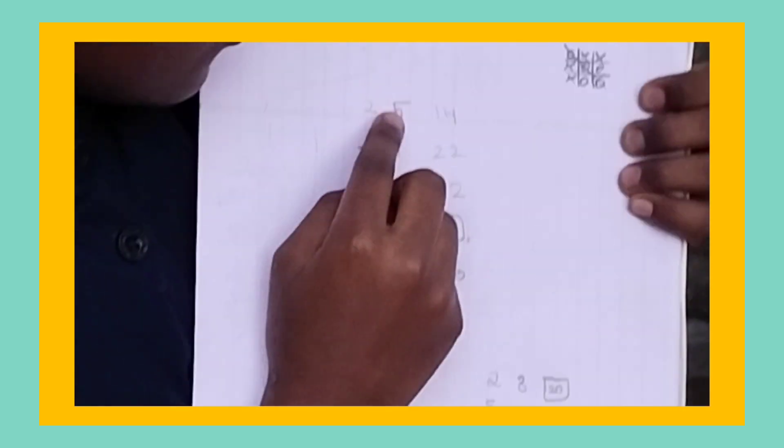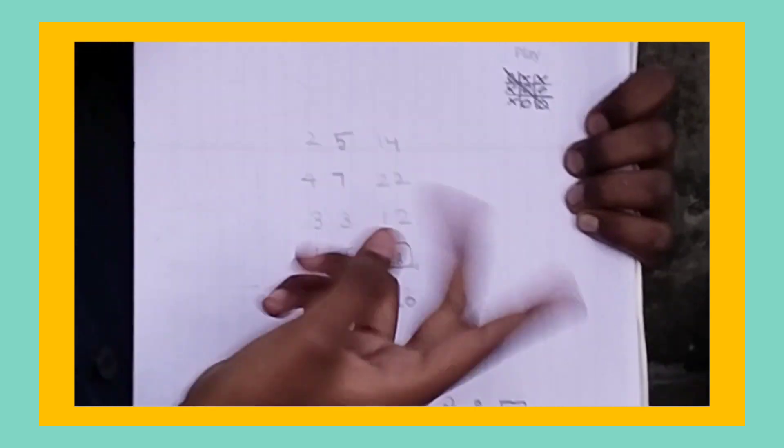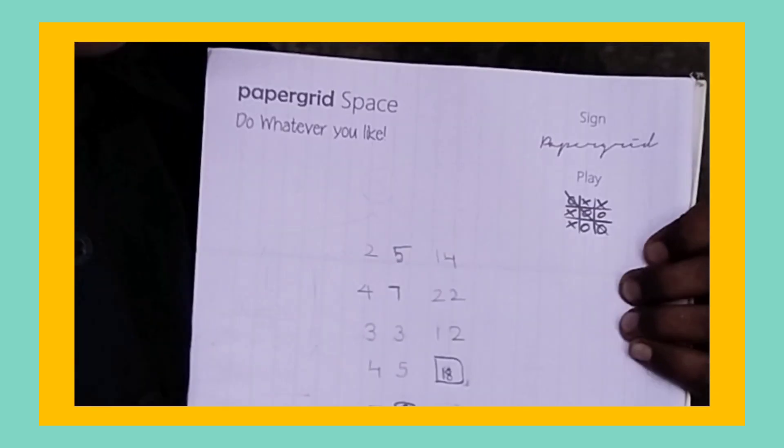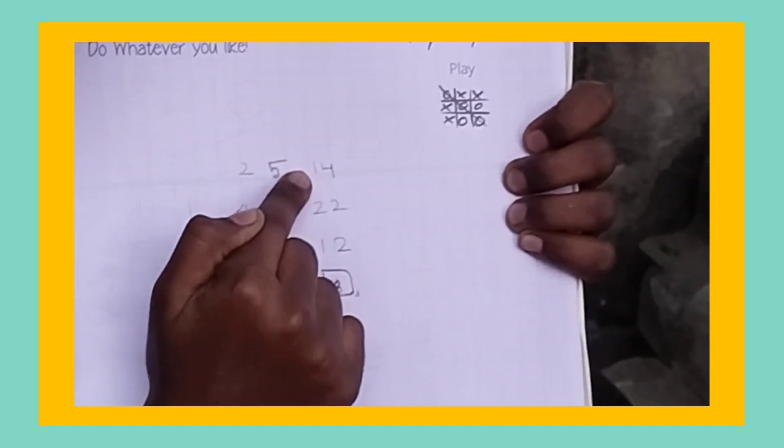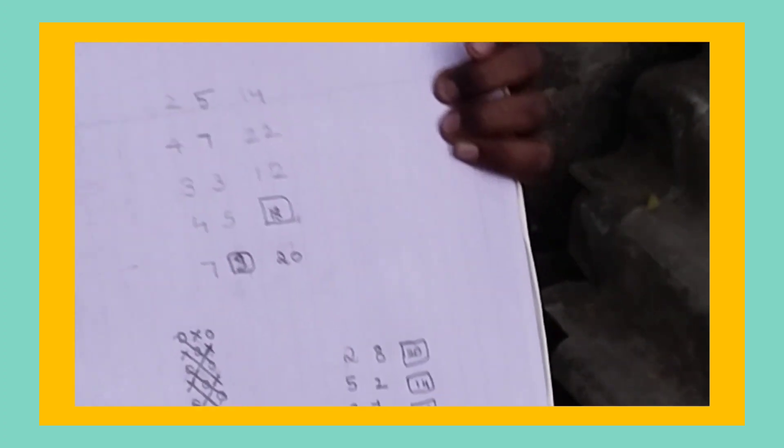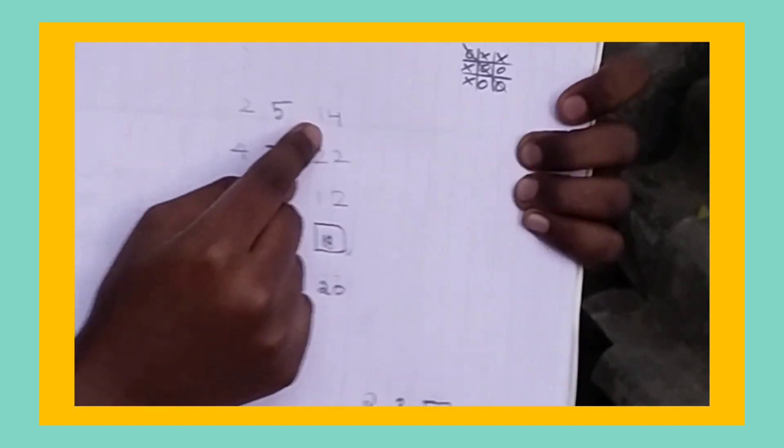Okay, 2 plus 5, 6, 7. 2 sevens are 14. We multiply here 2 tables, so 14 answer is coming. I tell again, 5 plus 2, 7. And we multiply this 2. For 2 tables, 2 sevens are 14.